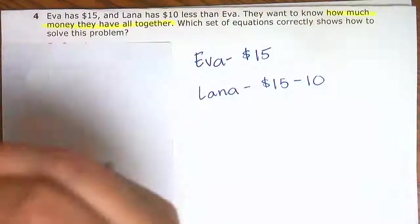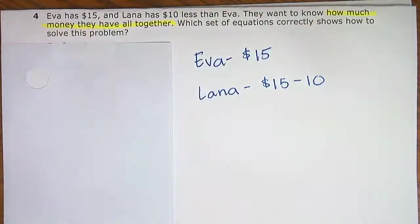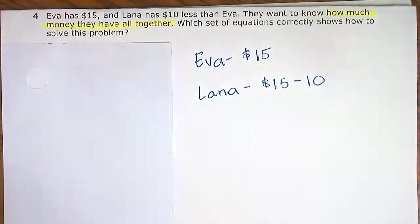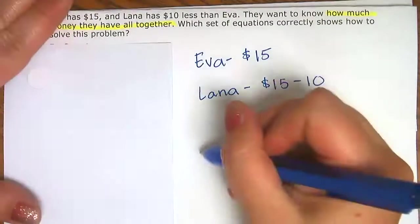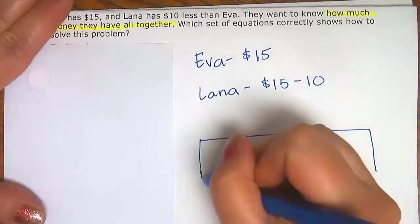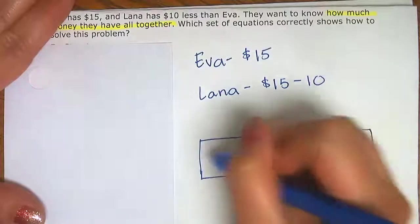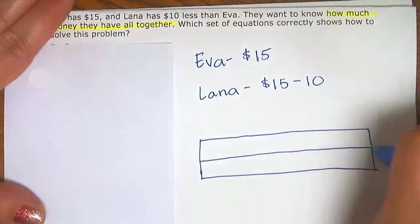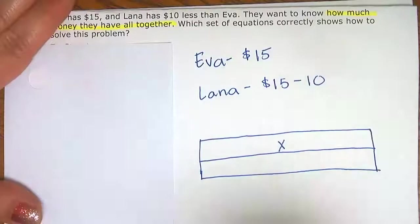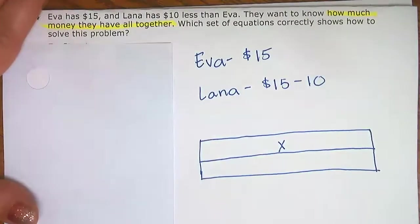Whenever I get ready to set up a strip diagram to organize my thinking, I have to ask myself: do I know the total? How much money they have all together — that's the total, and I don't know that. That's what I'm looking for. So when I set up my strip diagram, I leave the total blank and fill in X for the total, which is what they use in the answer choices.